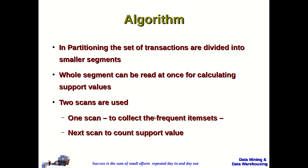In partitioning, the set of transactions is divided into smaller segments called partitions, and each whole segment is loaded into main memory for calculating support values. Two scans are used in the algorithm: one scan to collect frequent item sets, and a second scan to count support values. The transaction database is scanned once to collect frequent item sets and again to calculate the support count.